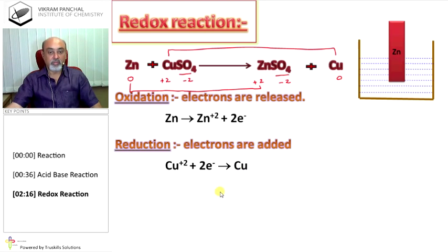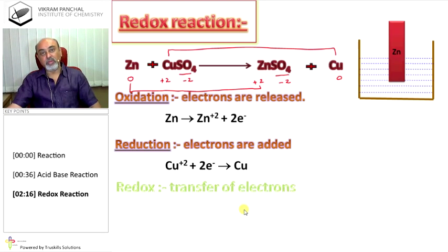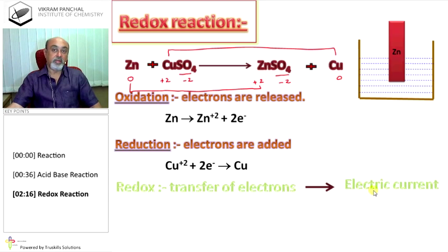Here zinc release electron, copper gain electrons. So, there will be electron transfer during redox reaction. And transfer of electron is known as current. That means, if you carry redox reaction, it is possible to produce current. So, chemical energy can be converted to electrical energy.